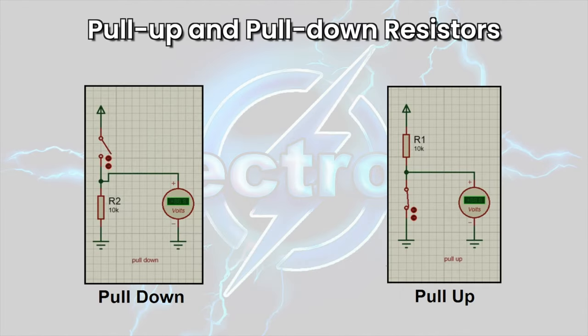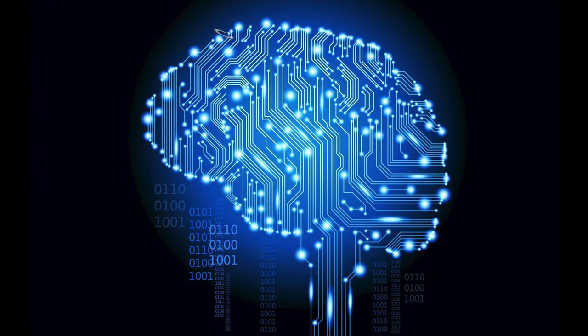Pull-up and pull-down resistors: pull-up and pull-down resistors are used to ensure that a circuit node has a defined voltage level when no active components are driving it. They are commonly used in digital circuits to ensure that inputs are in a known state.